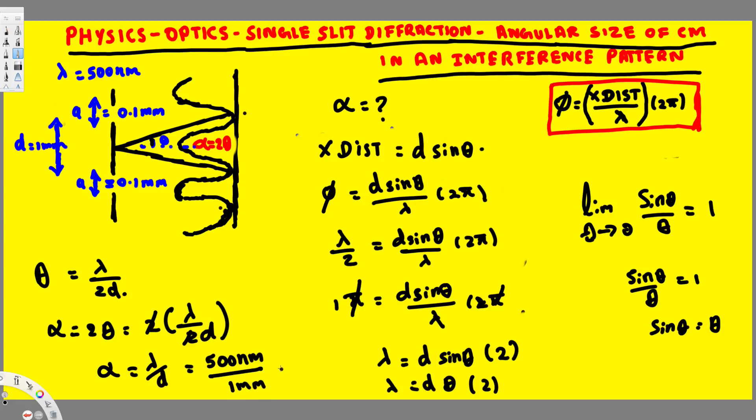And if you calculate this one you will get the answer 5 times 10 to the power of minus 4 in radians. And if you convert this one into degrees, that's going to give you 0.02865 degrees.